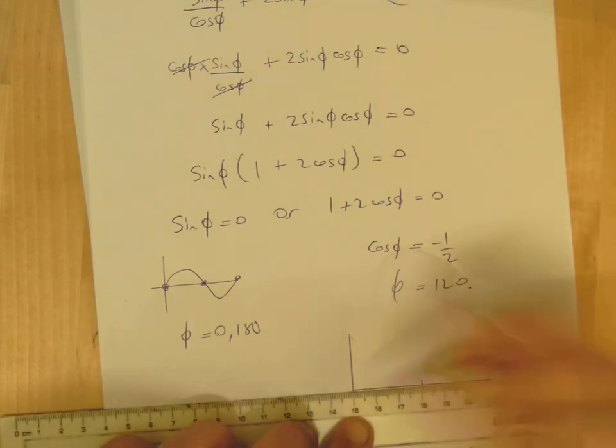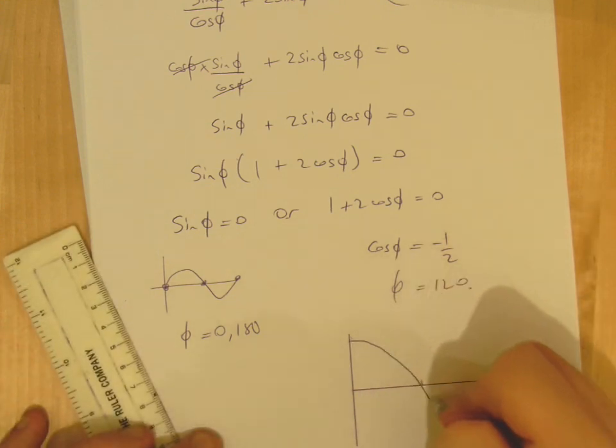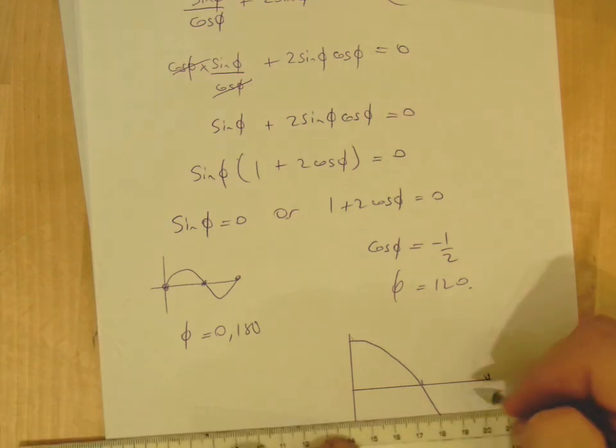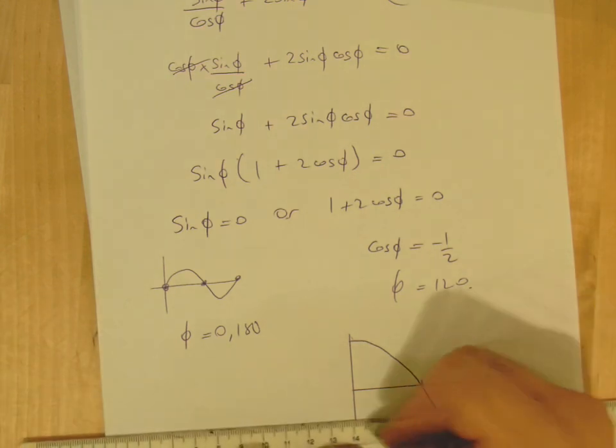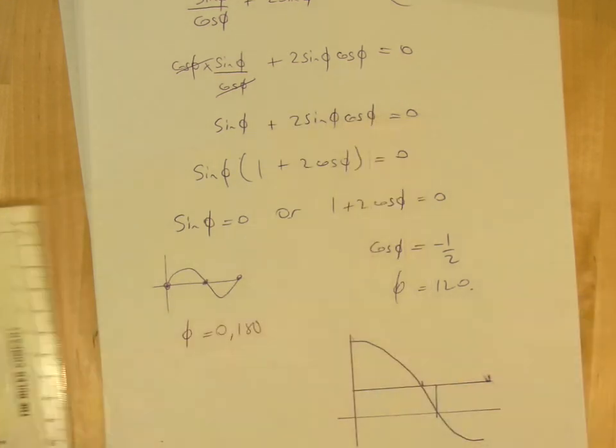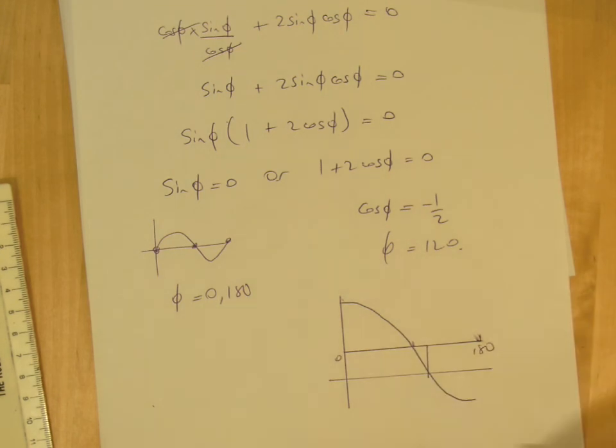I just need values between 0 and 180, so 120. That's it, just one solution, because we're only interested in solutions between 0 and 180.